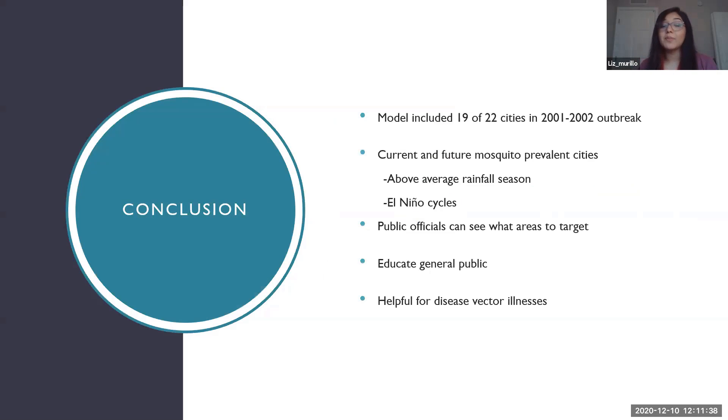So in conclusion, I did want to say that for being a general model, it did fairly well because it had 19 of those 22 cities in the 2001 outbreak. And with this model, current and future mosquito prevalence cities can use it to identify cities or parts of their cities that are most likely to have a dengue outbreak. So cities that have an above average rainfall season can go ahead and just put the data necessary and then pinpoint locations where they might be at risk. Also, it can be used for cities that aren't impacted every year, but impacted by cycles like El Nino that bring the warmer and wetter conditions and only happen two to seven years. They can use this model to pinpoint areas that need attention after these specific cycles.